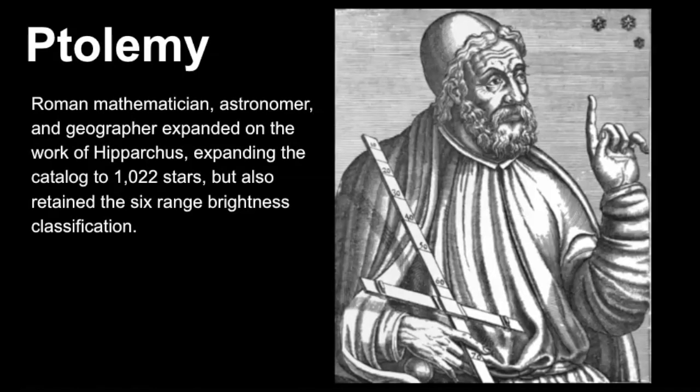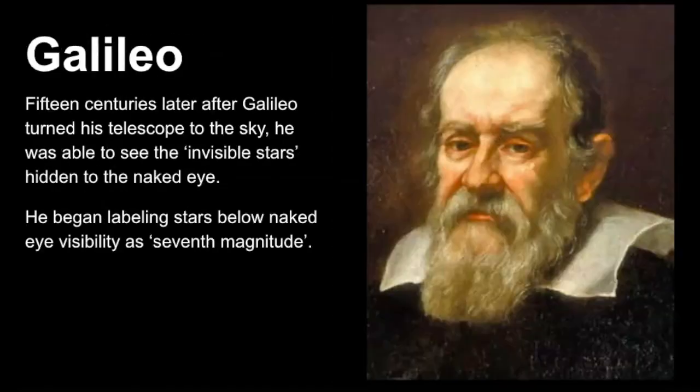The next character in our story of star magnitude is Ptolemy, who was a Roman mathematician and astronomer that expanded on the work of Hipparchus. He still retained that six-range brightness classification with one being the brightest and six being the faintest.